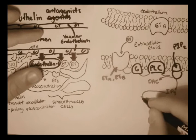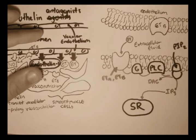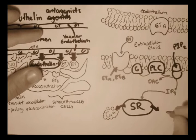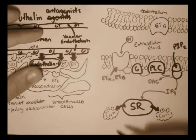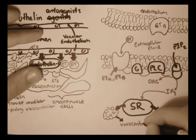So now, inositol triphosphate travels to the sarcoplasmic reticulum within the cell. Now, the sarcoplasmic reticulum, when bound with inositol triphosphate, it secretes calcium ions. Now, these calcium ions, as you may know from the previous video, calcium ions within the cell, causes vasoconstriction, which increases blood pressure.